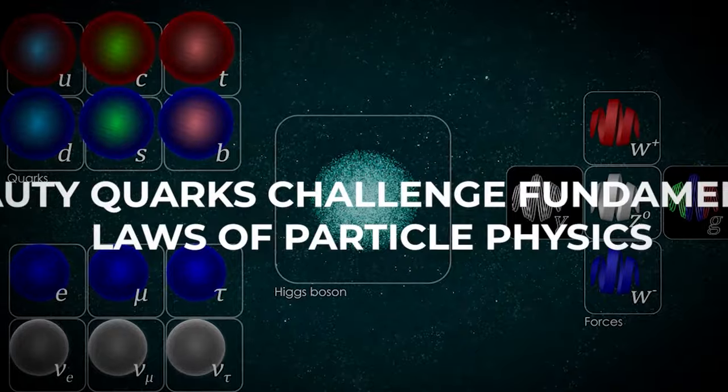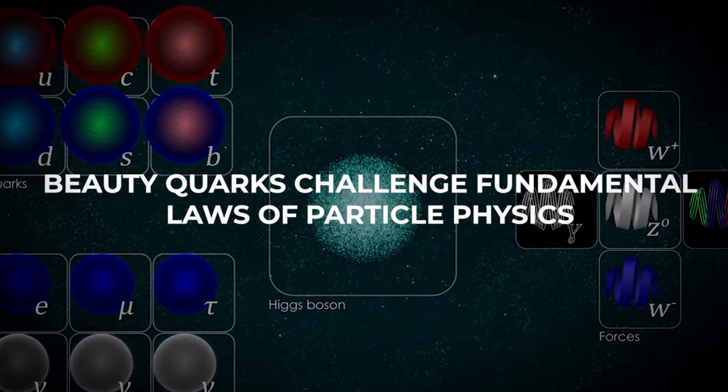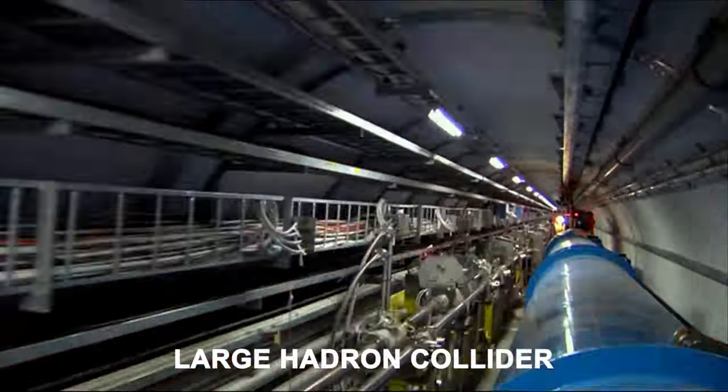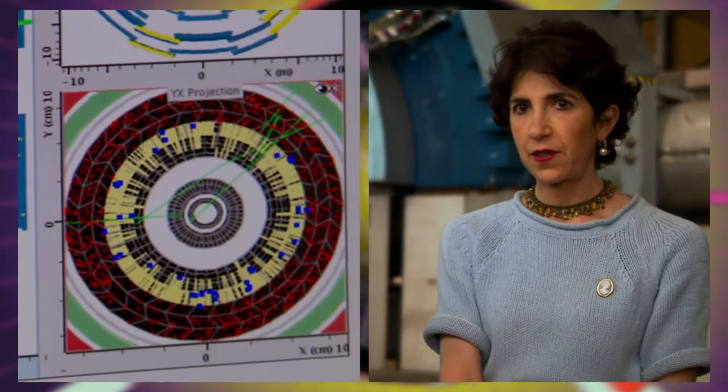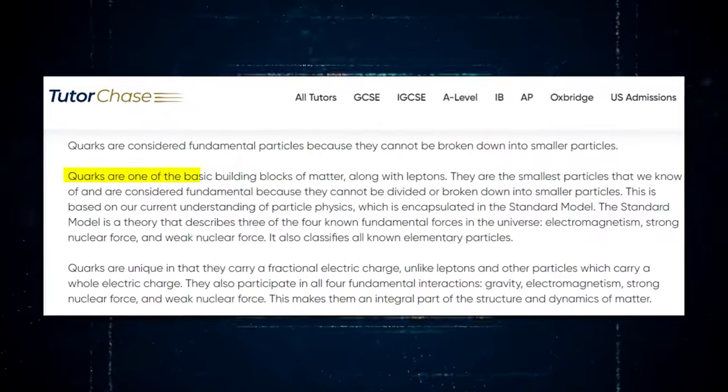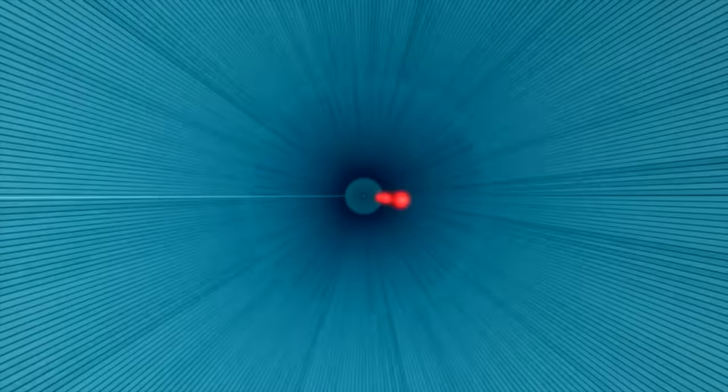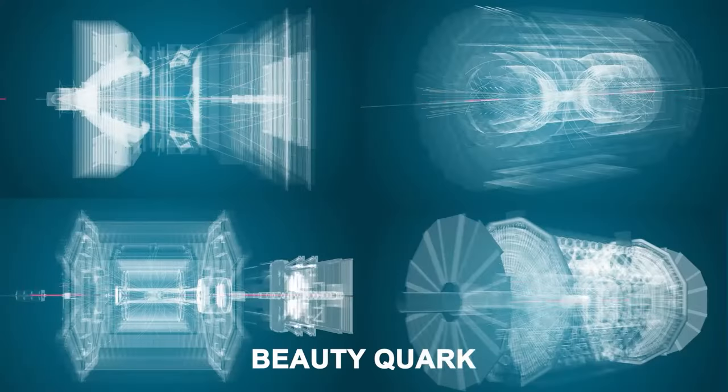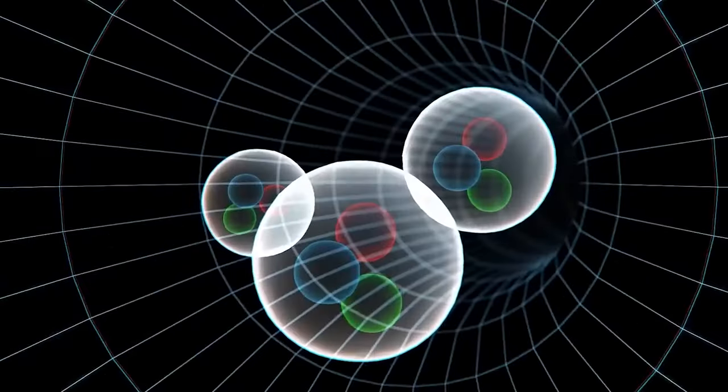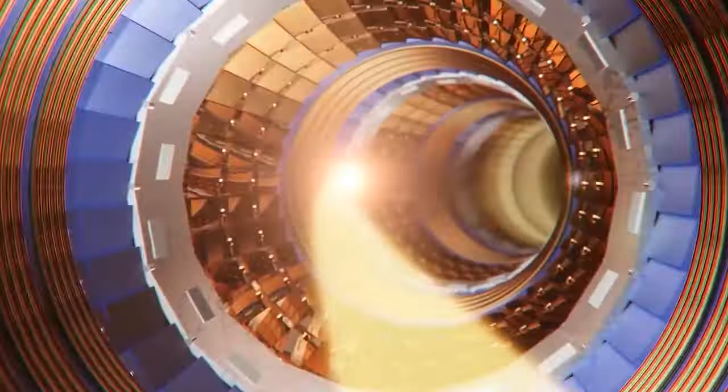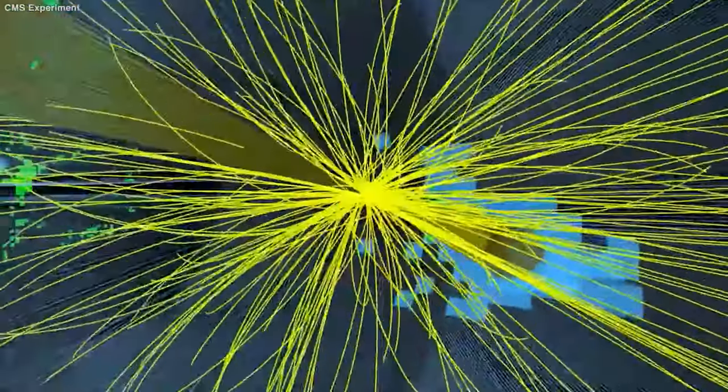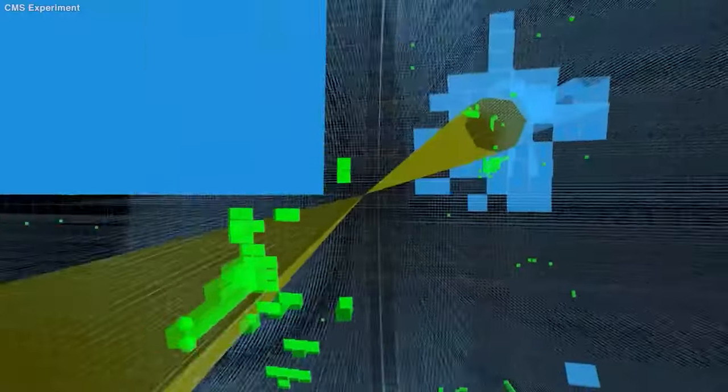Beauty quarks challenge fundamental laws of particle physics. In a recent study using the Large Hadron Collider, scientists at CERN noticed something unusual about a specific type of quark. Quarks are considered the basic building blocks of matter and come in different varieties called flavors. The focus of the anomaly was the beauty quark, which is known for its extremely short average lifespan of just one and a half trillionths of a second. What puzzled the researchers was the unexpected way in which the beauty quark decayed.